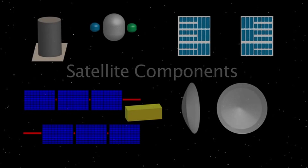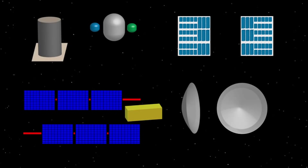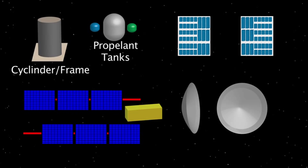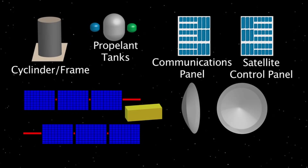Modern communication satellites are used every day to extend the distance a signal can travel beyond the curve of the earth. This tutorial will demonstrate what components make up a typical satellite and how it's constructed.